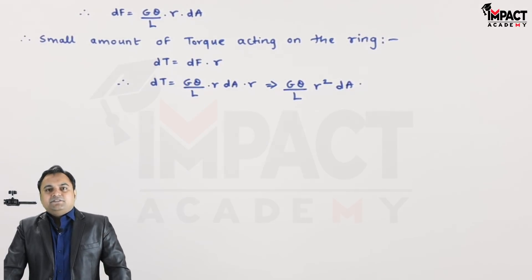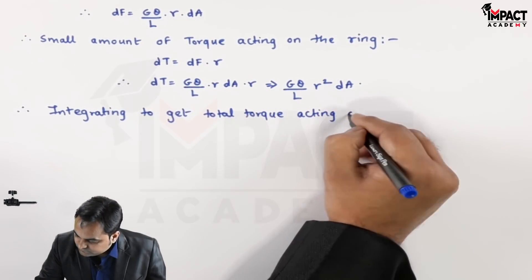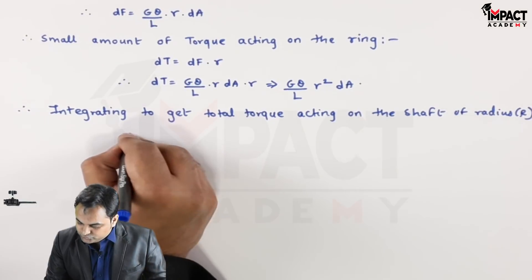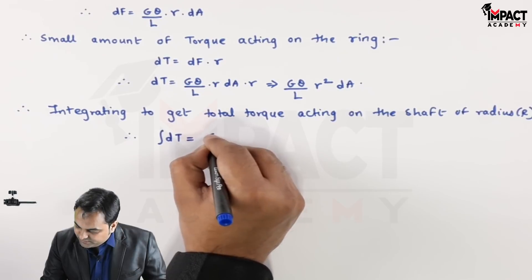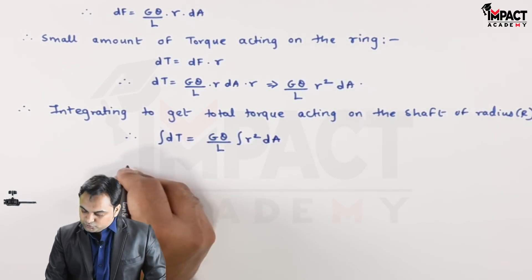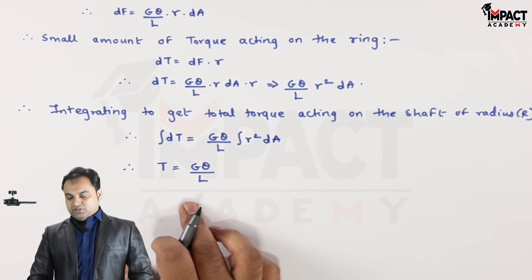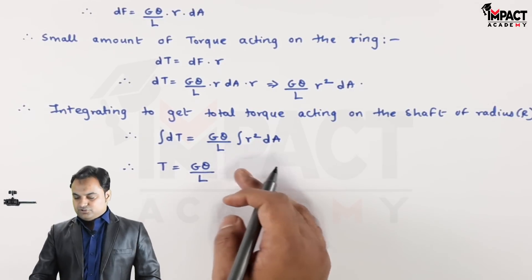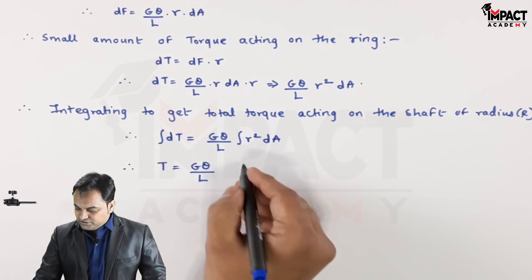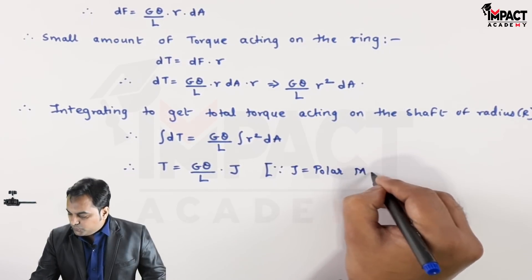To get the total torque, I integrate this equation. Integrating dT gives T = (G·theta / L) · integral of r²·dA. G, theta, and L are constant terms. By definition, the integral of r²·dA is the second moment of area, also called the polar moment of inertia, denoted J.